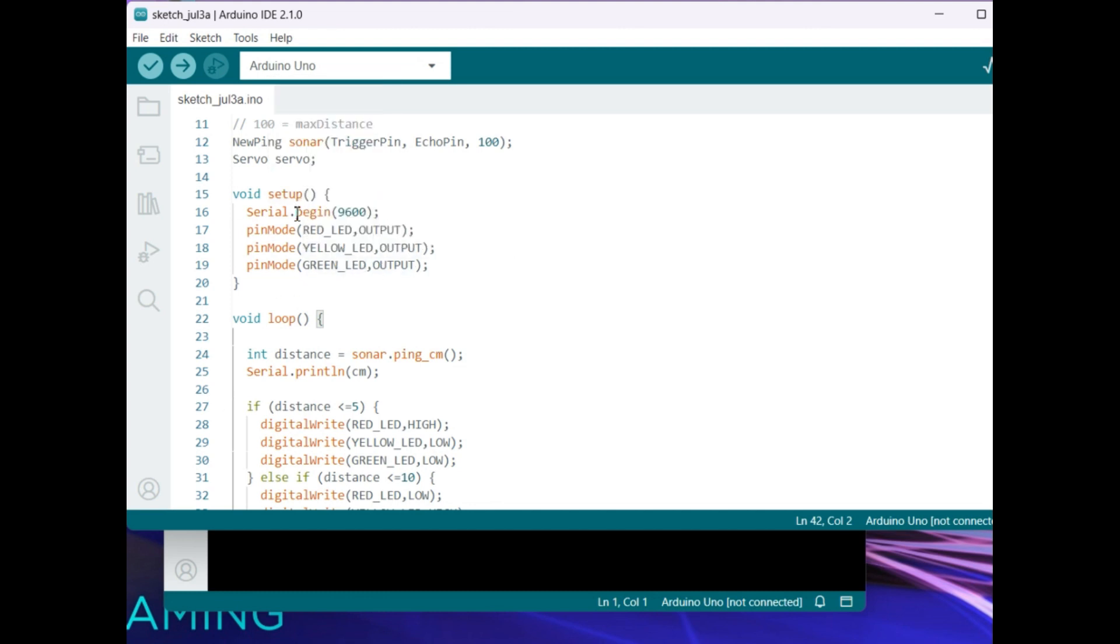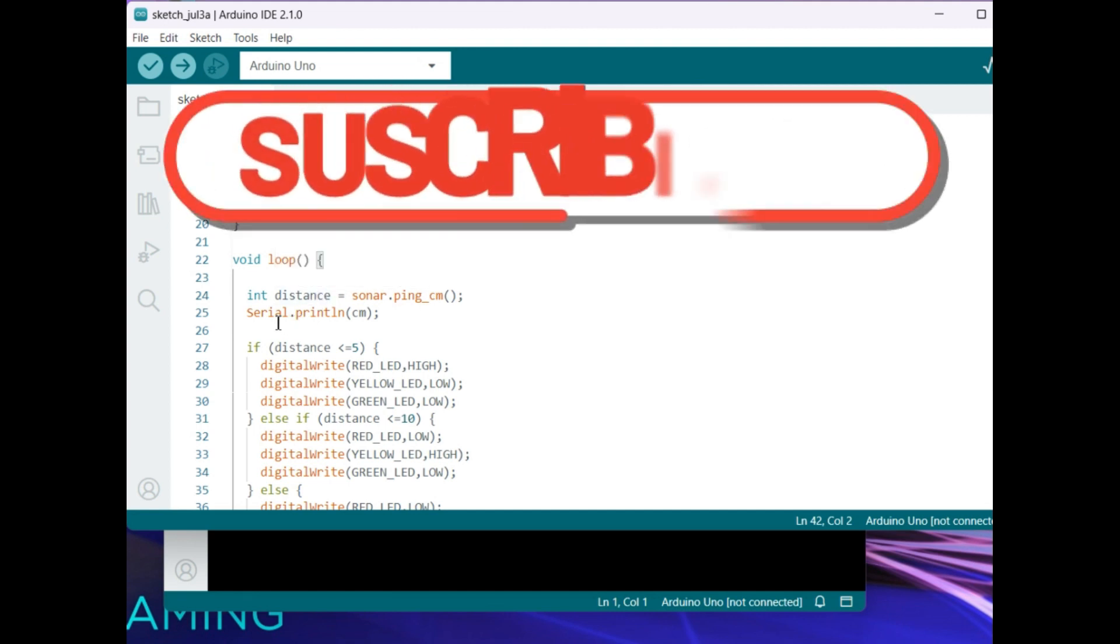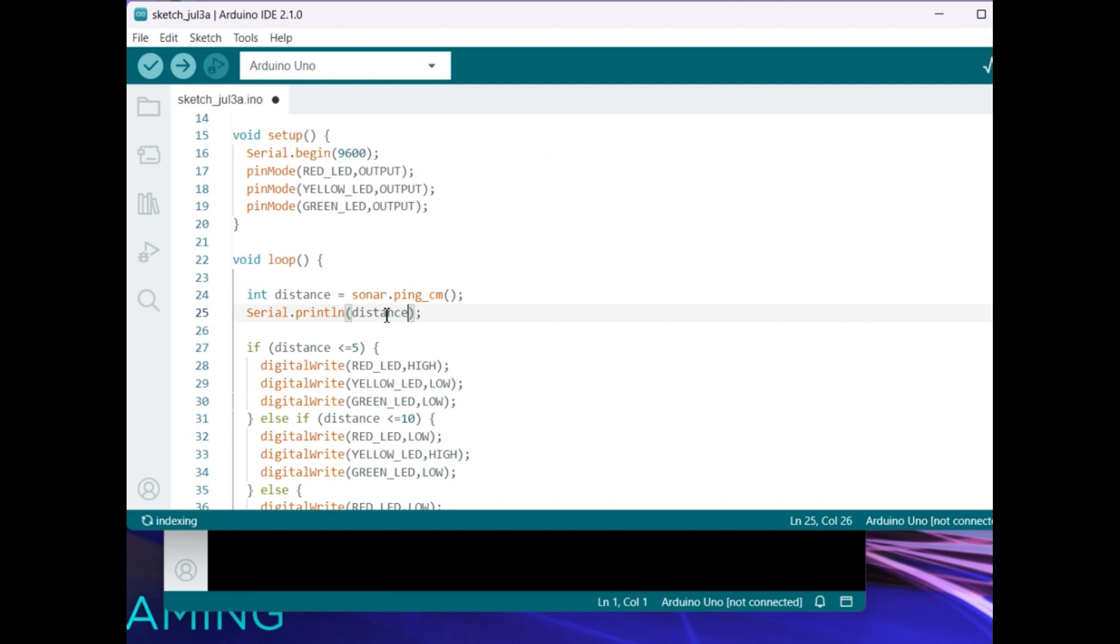This setup function will run only once. The serial baud rate is 9600. In loop, we are using the instance, that is sonar dot, the function name is called ping_cm. We try to get the distance in centimeters. The second distance, we try to print it. I'm making it distance print.